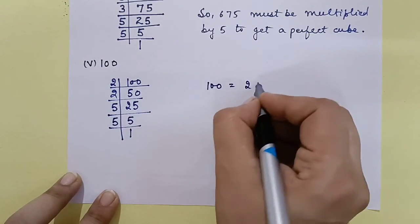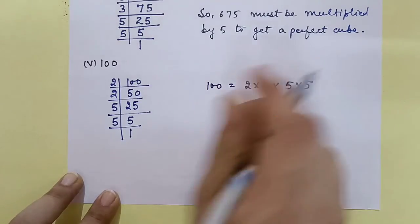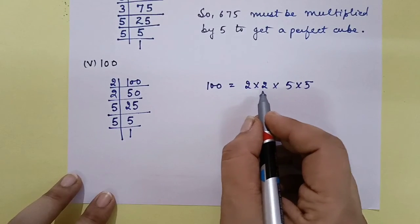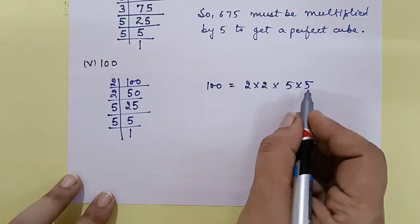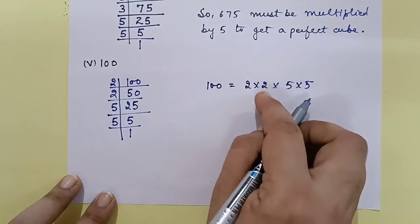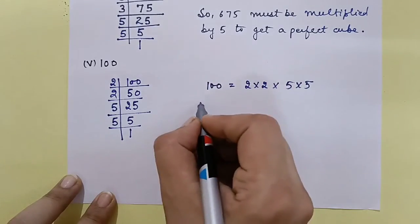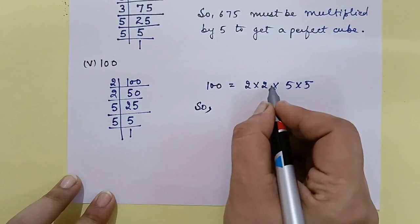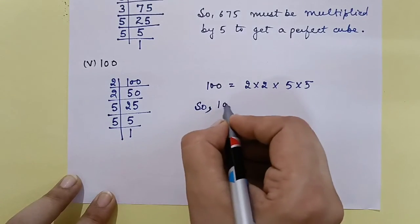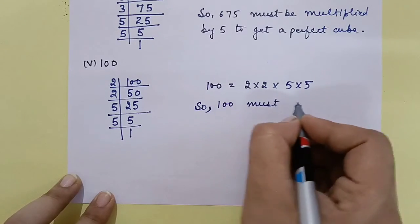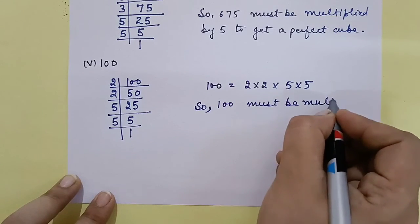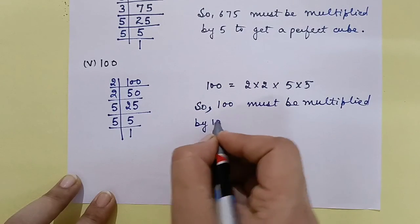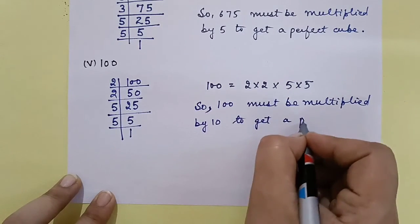Now we have two 2s and two 5s. For a perfect cube, we need three 2s and three 5s. We are short by one 2 and one 5. So we need to multiply by 2 × 5 = 10. So 100 must be multiplied by 10 to get a perfect cube.